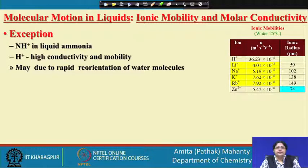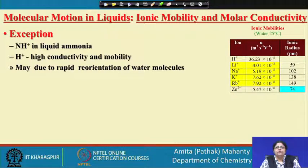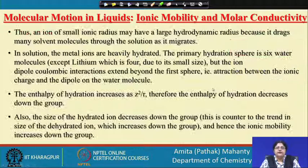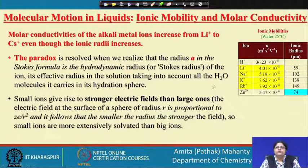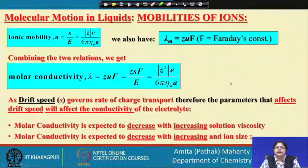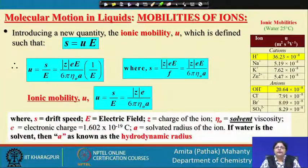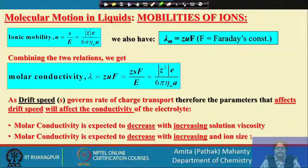There are two exceptions: the NH₄⁺ ion in liquid ammonia, and the very high conductivity of H⁺ and OH⁻ ions. Looking at the comparisons given before, you see they are much higher, and we will try to explain in the next lecture why this is so. Thank you.